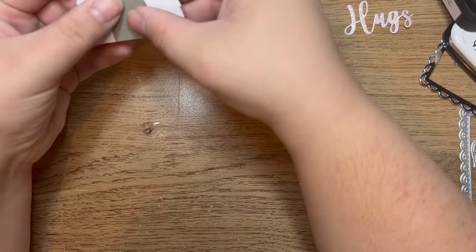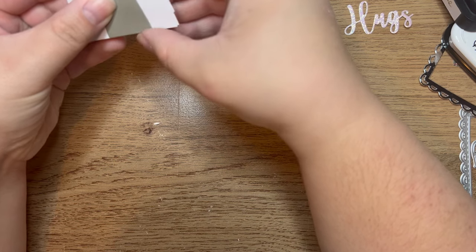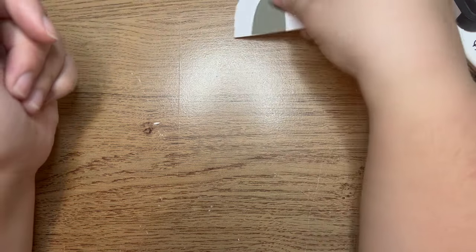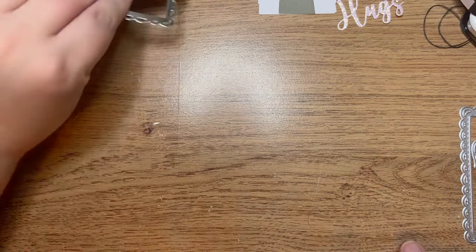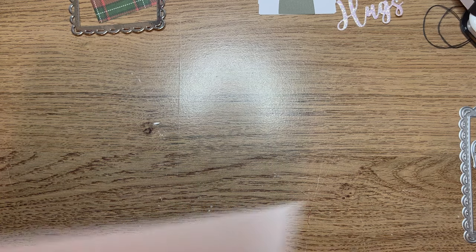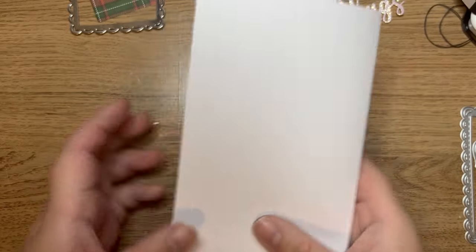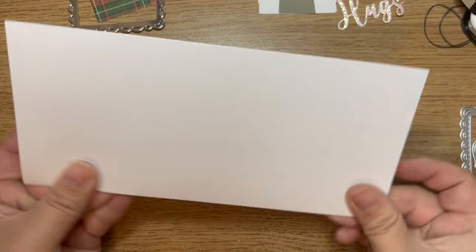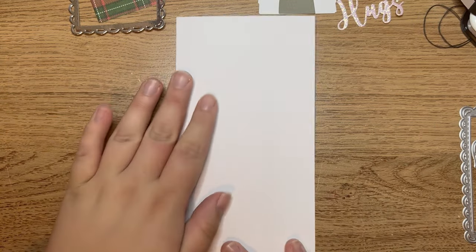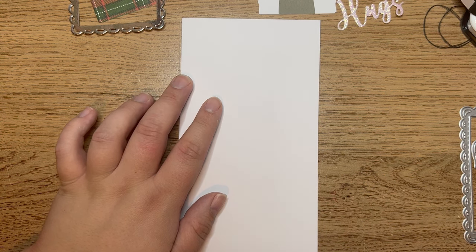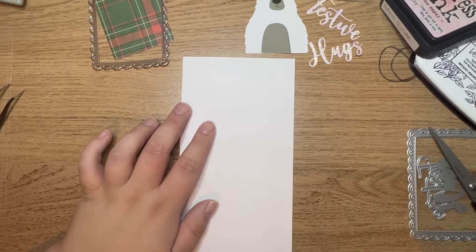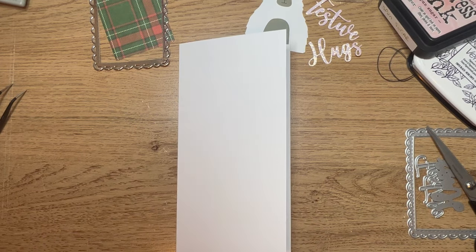So we've now got our polar bear ready, our sentiment ready, our little bow ready, and our frame with the inside ready. Now it's time to start getting the rest of the card ready. I'm using a card blank - it's my preferred way. You can make your own cards if you want. I'm using a DL size card. I'm going to zoom you out just a little bit.